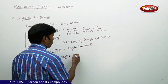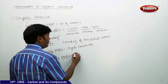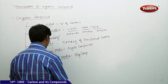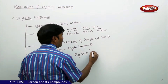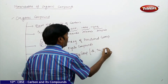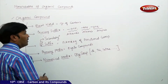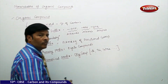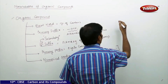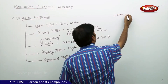For a given organic compound, the numerical prefix is mentioned in terms of di, tri, tetra, and so on. I would like to give you one example to make this very clear.